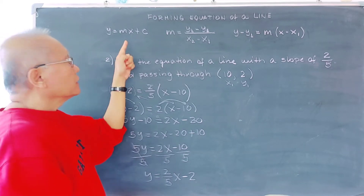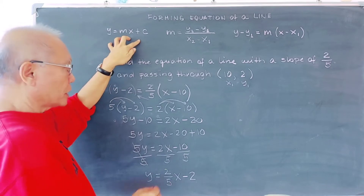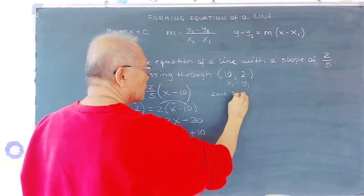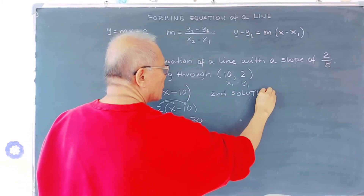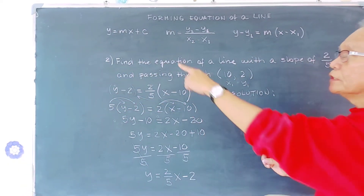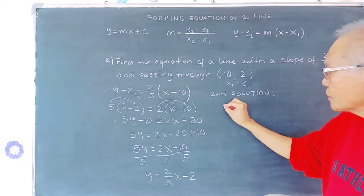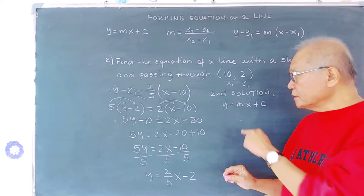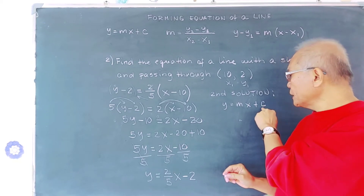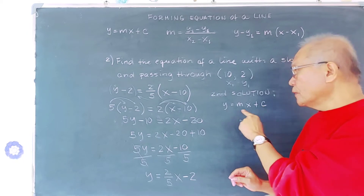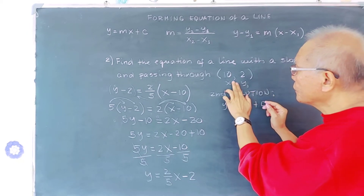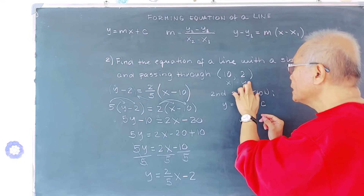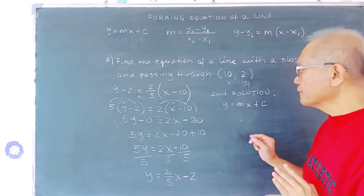The second solution uses the slope-intercept form y = mx + c to compute the y-intercept c. We substitute the known point (10, 2): y = 2, x = 10, m = 2/5. So we write 2 = (2/5)(10) + c.